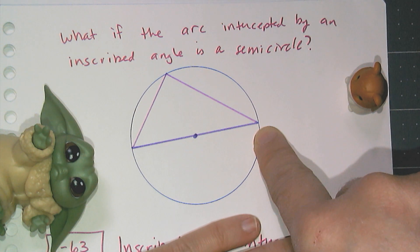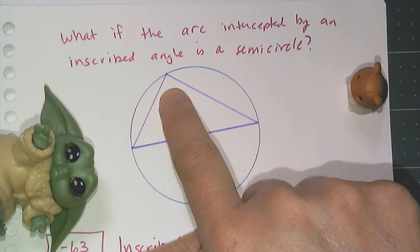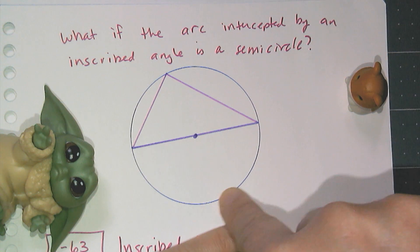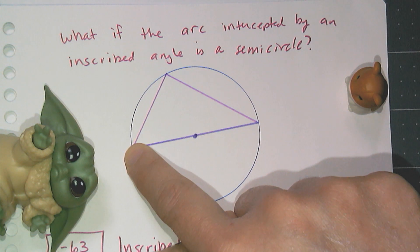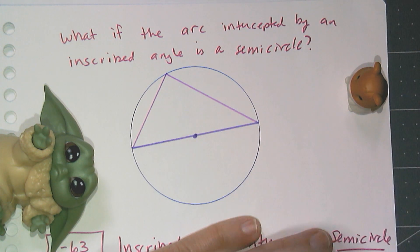And by the inscribed angle conjecture, I can prove that this is a 90-degree angle, because a semicircle has a measure of 180 degrees, and any angle that is inscribed that cuts a semicircle has to have a measure that's half of that, or 90 degrees.